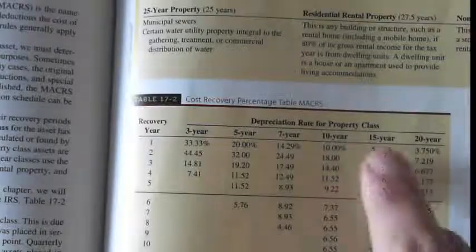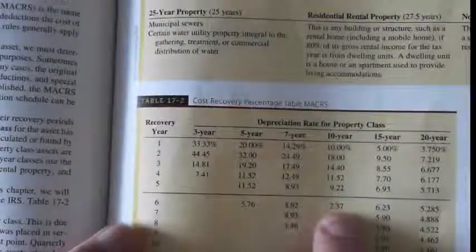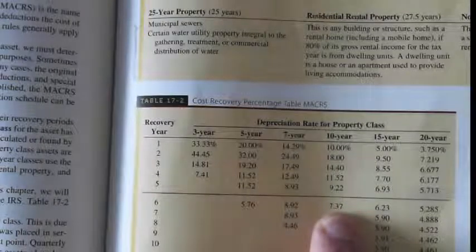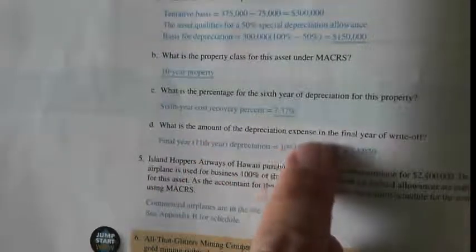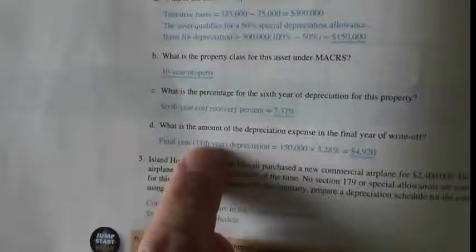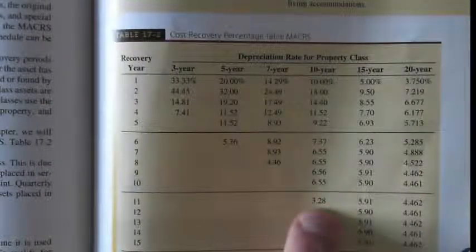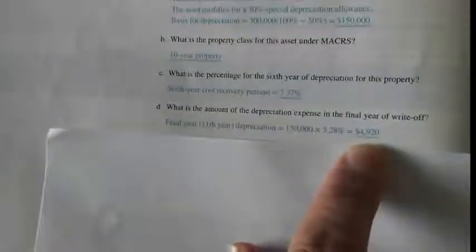What is the percentage for the 6th year of depreciation for this 10-year property? We go back to the table: 10-year property, year 6 — 7.37%. That answers that question. For the final question — what is the amount of depreciation expense in the final year of the write-off for a 10-year property? We go back to the table: 10-year property, final year — 3.28%. We take that rate as a decimal, multiply by $150,000, and get the final year write-off of $4,920.